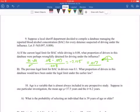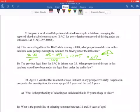The next part. The previous legal limit for BAC drivers was 0.1, what proportion of drivers in this database would have been under the legal limit under the earlier law. So, instead of the problem the same way, 0.1 minus 0.097 divided by our standard deviation 0.008.